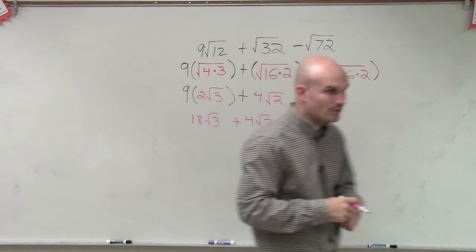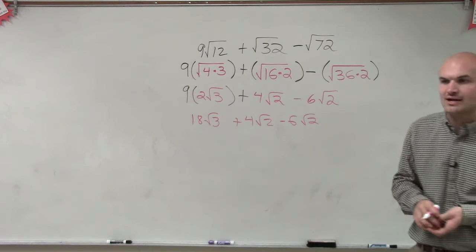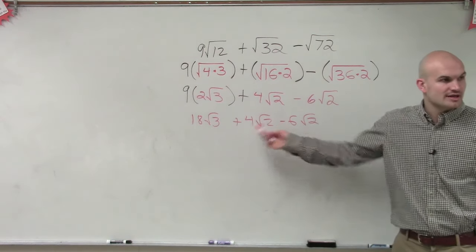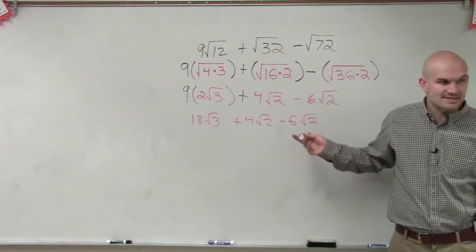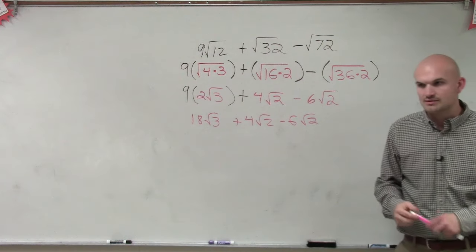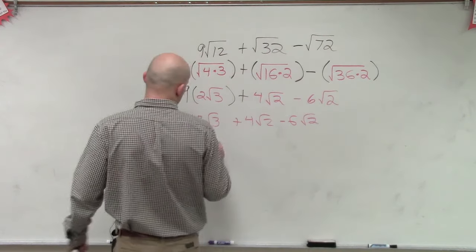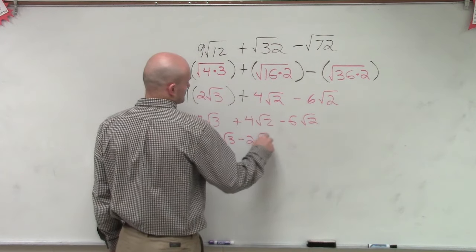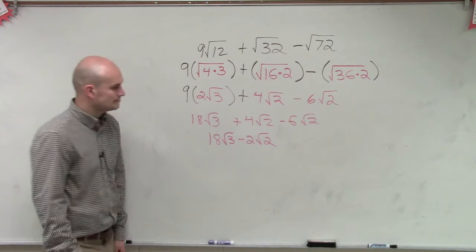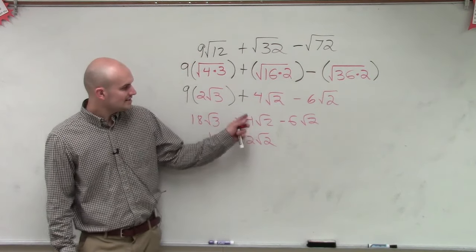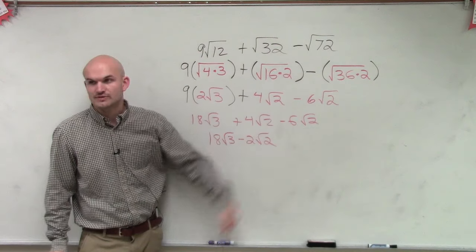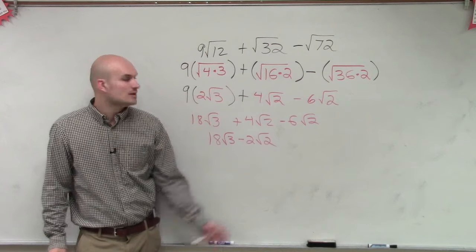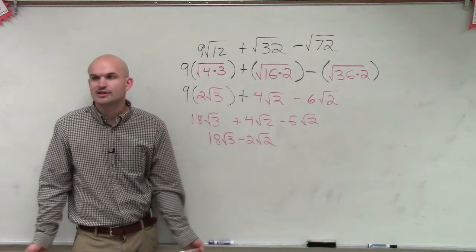Now we look at this and we say, what are the only radicals I can combine? The ones that have the square root of 2. And then you just remember, it's just like x's. 4x minus 6x. So 4 square root of 2 minus 6 square root of 2 is negative 2 square root of 2. I just did 4 square root of 2 minus 6 square root of 2. You can only do that because they both have the same square root of 2, just like they're both x's.